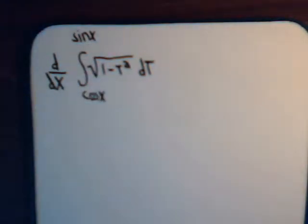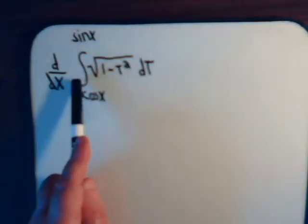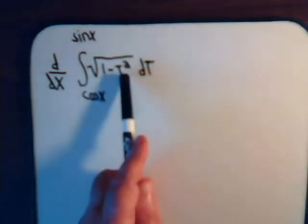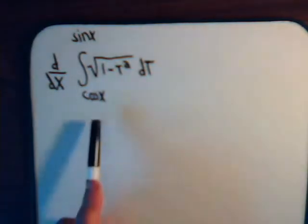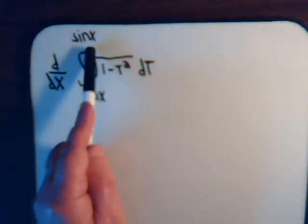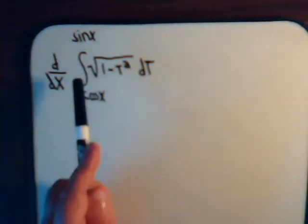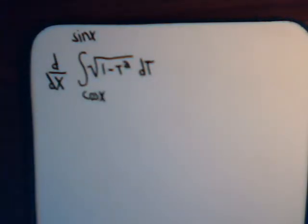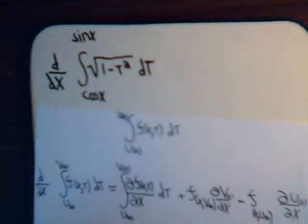and we want to take the derivative of this with respect to x. Now, as we pointed out in our previous videos, this will be some function of x. If we differentiate this, it will give us a function of t, but then for t we substitute in cosine of x and sine of x. So this will be some function of x. Now, how do we find the derivative of that integral? Let's just go ahead and look at the formula that we developed in the last video.